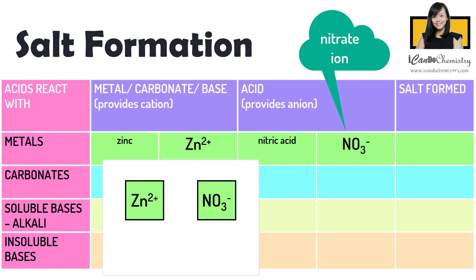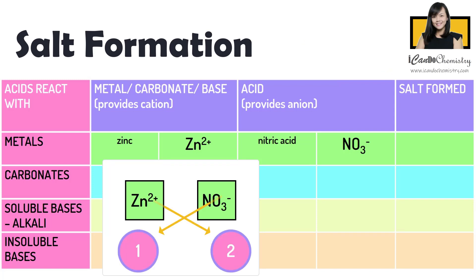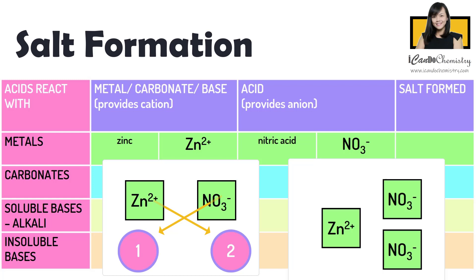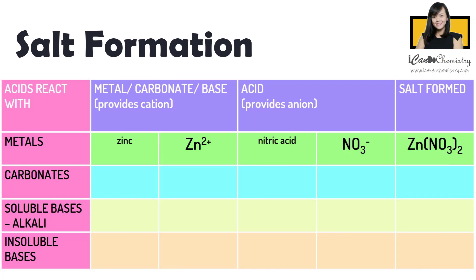To work out the formula, we will bring the value of the charge down. We call this the cross method. The ionic compound you want to form should have an overall charge of zero. So we have two nitrate ions to balance the charge of one zinc ion, making the overall charge of this ionic compound zero. Hence, the formula of zinc nitrate is Zn(NO3)2.